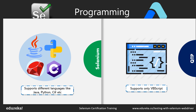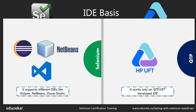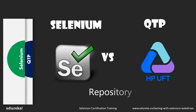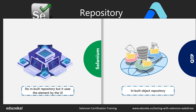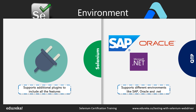Regarding IDE support, Selenium test scripts can be integrated to run across IDEs like Eclipse, NetBeans, .NET, and so on. Whereas QTP test scripts work only on the QTP-developed IDE and cannot be integrated with Eclipse, NetBeans, or any other IDE. For repository, Selenium does not have an inbuilt repository — it uses elements in the user interface to test applications. Whereas QTP has an inbuilt object repository where test scripts are executed. Finally, on environment support, Selenium supports all additional plugins, whereas QTP supports environments like SAP and Oracle but does not support additional plugins.